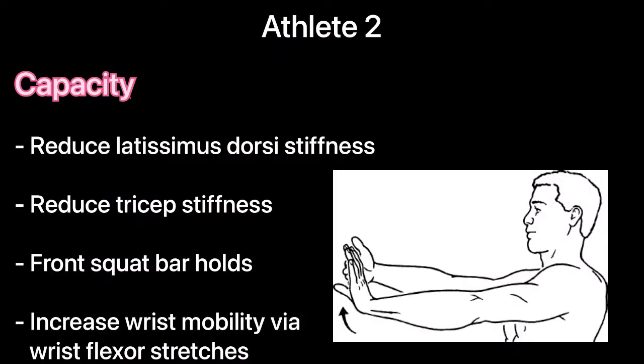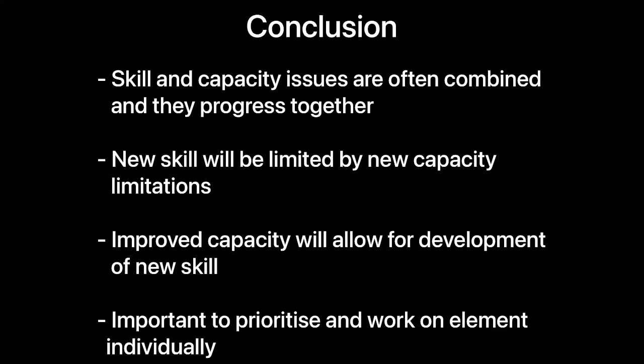For athlete two, the aim is to reduce latissimus dorsi stiffness and tricep stiffness through the exercises labelled. To help with capacity, the athlete can also do front squat bar holds and increase wrist mobility through wrist flexor stretches. In conclusion, skill and capacity issues are often combined and progress together. New skills will be limited by capacity limitations, and improved capacities will allow for the development of new skills. However, it is important to prioritise and work on elements individually.